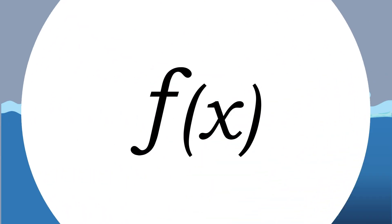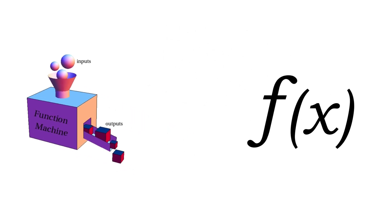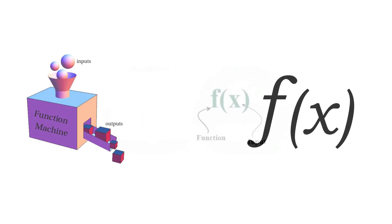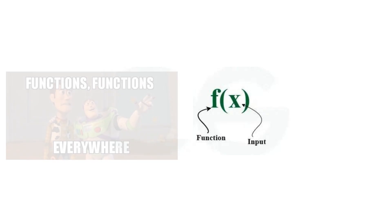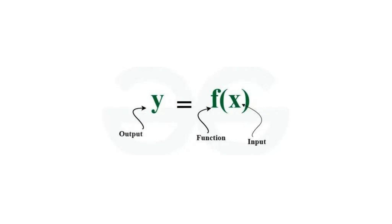Functions. A function is a mathematical object that takes in an input and spits out an output. A function is often denoted by a letter, usually the letter F. We write the input of the function in parentheses to the right of the function's name, and we say that the function evaluated at this input is equal to its output.